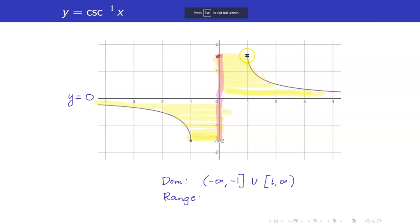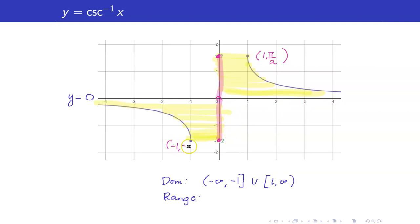Pi over 2 is included because of the point (1, pi over 2). Zero is not included — we have a horizontal asymptote there. Negative pi over 2 is included because of the point (negative 1, negative pi over 2). So our range is negative pi over 2 to pi over 2, but we remove 0.